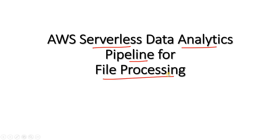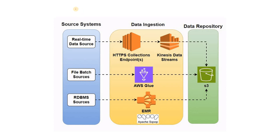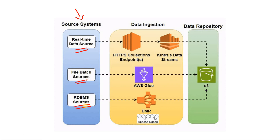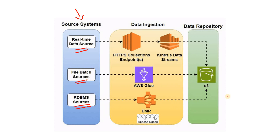In our day-to-day life, we encounter different source systems in data engineering pipeline design. Some sources can be real-time data sources, some sources can have data coming as file format, and some data in source systems are sitting in RDBMS like Oracle, SQL Server, etc. We use several Big Data Tech Stack or AWS services for different use cases to ingest the data in our Cloud Data Lake or S3.